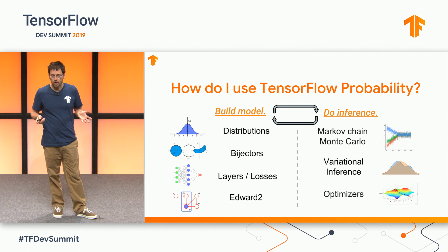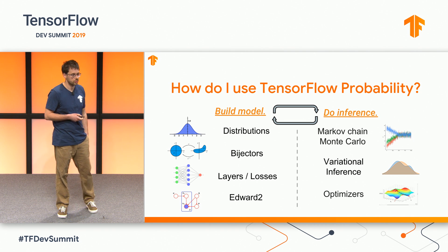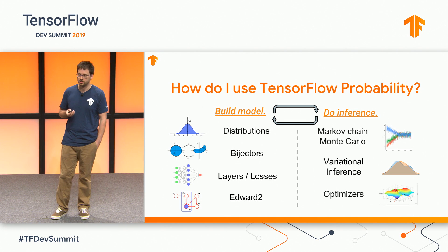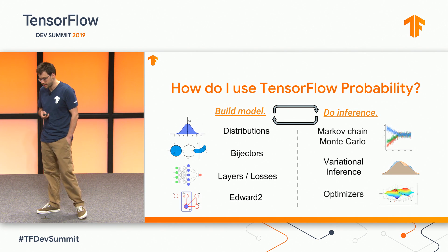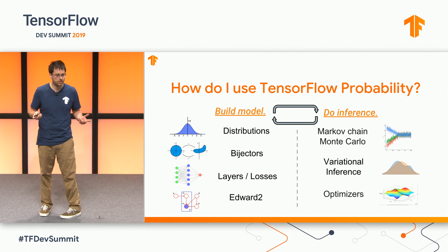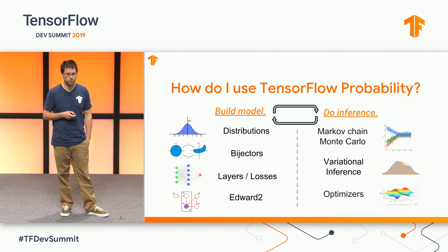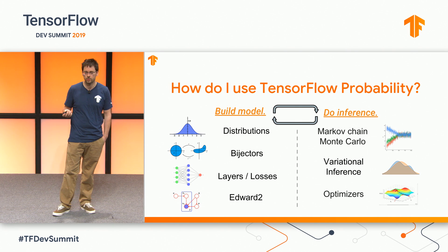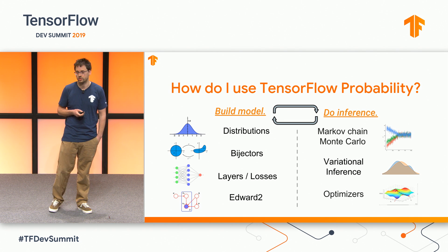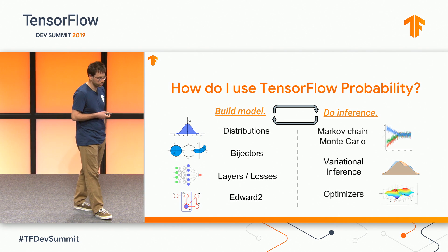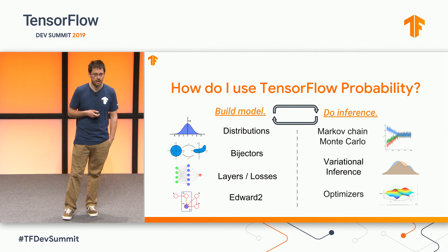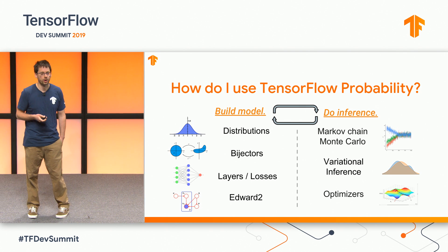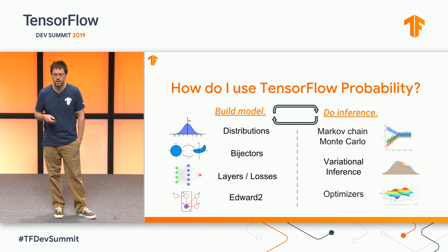You saw layers. We also have losses that help you build Monte Carlo approximations to otherwise intractable calculations. EDWARD2 is our probabilistic programming language for combining different random variables. On the inference side, we have Markov chain Monte Carlo tools including Hamiltonian Monte Carlo, which naturally takes advantage of TensorFlow's automatic differentiation. We also have variational inference tools, again leveraging TF's autodiff and optimizer toolbox, and optimizers like Nelder-Mead and BFGS that often come up in probabilistic modeling.